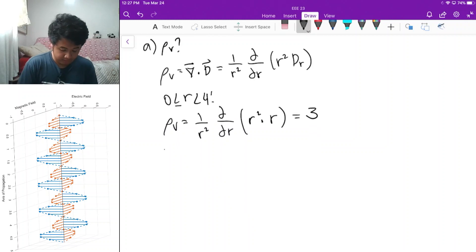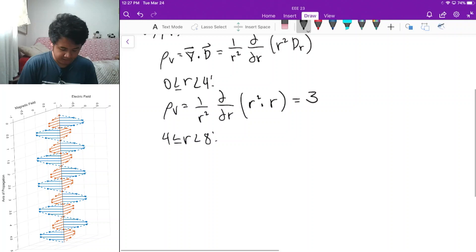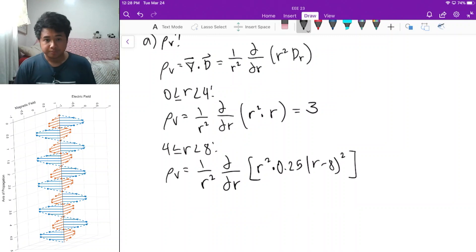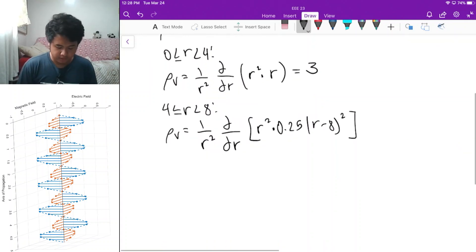Next is in the range 4 to 8. From the range 4 to 8, the divergence can be solved. Still the same formula, different expressions. You plug that in. And solving this derivative here, you'll get the solution or the expression for the charge density.